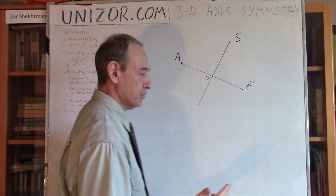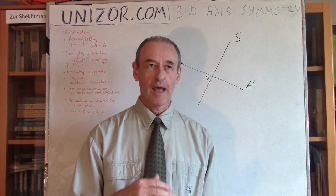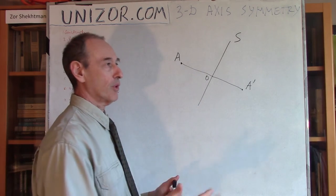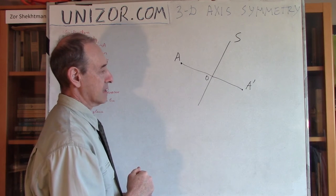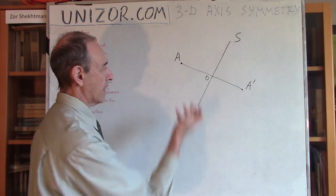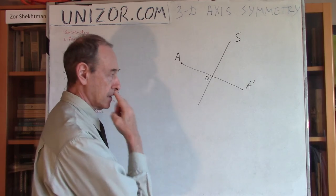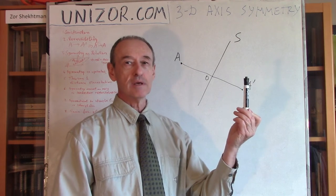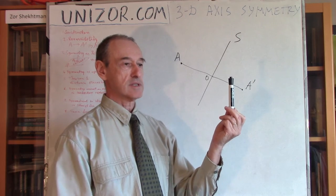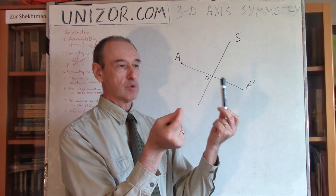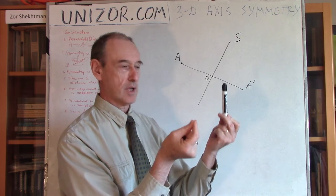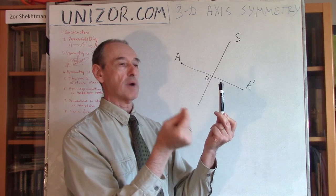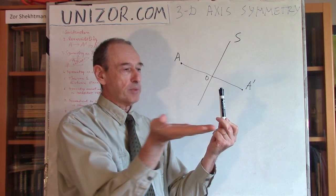We can view symmetry around the axis in a more dynamic way. I would like to propose viewing symmetry as a rotation of space by 180 degrees around this axis. Let's think about what rotation of space around an axis means. If I have a point somewhere in space, I would like to rotate it by an angle φ.